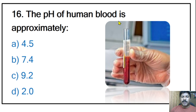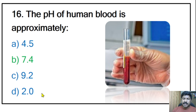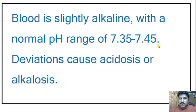Sixteenth question: the pH of human blood is approximately 4.5, 7.4, 9.2, or 2.0? The correct answer is 7.4. Our blood is slightly alkaline with a normal pH range of 7.35 to 7.45. A pH above 7 is alkaline; reducing pH increases acidity. If blood pH falls below 7.35, the condition is called acidosis; if it rises above 7.45, that condition is called alkalosis.